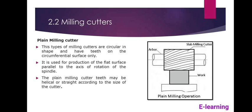Plain milling cutters are used for production of flat surfaces parallel to the axis of rotation. Mostly plain milling cutters produce a flat surface. The plain milling cutters may be helical or straight according to the size of the cutter.